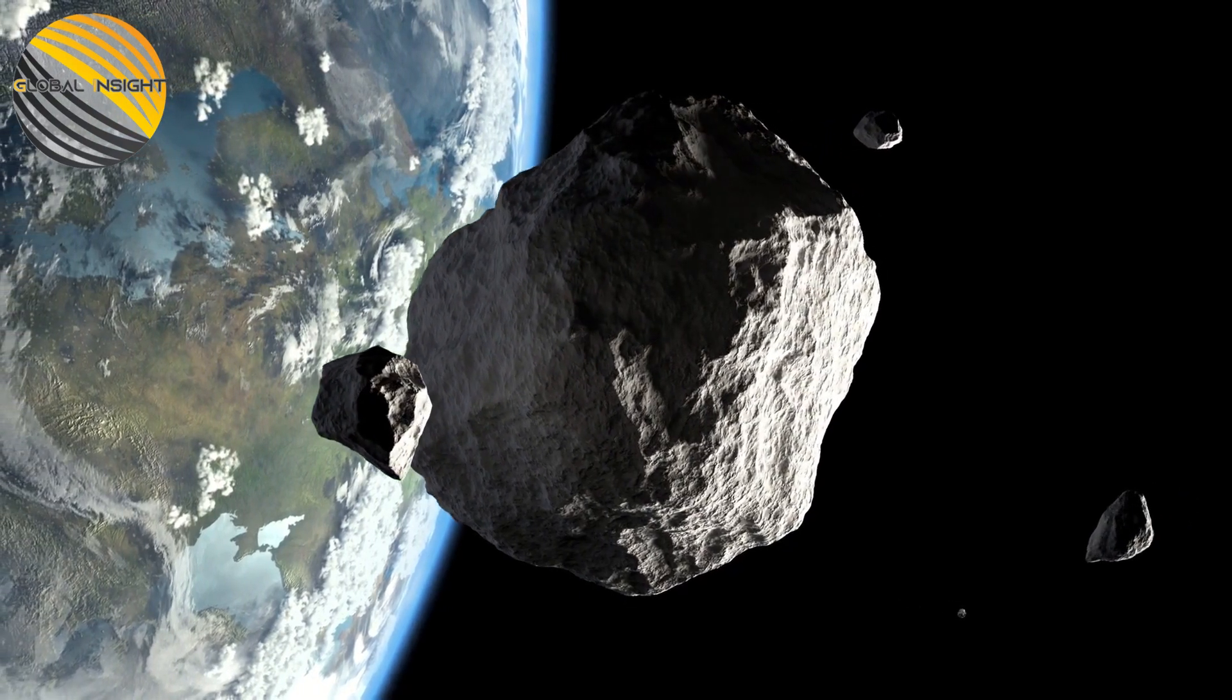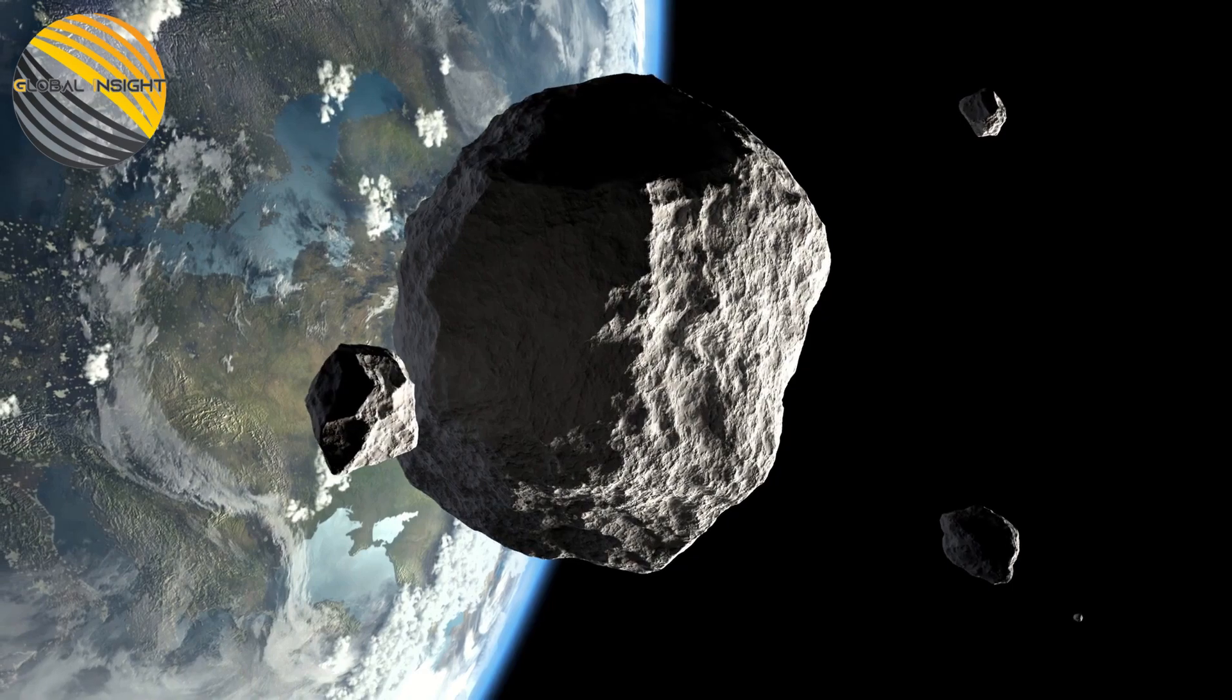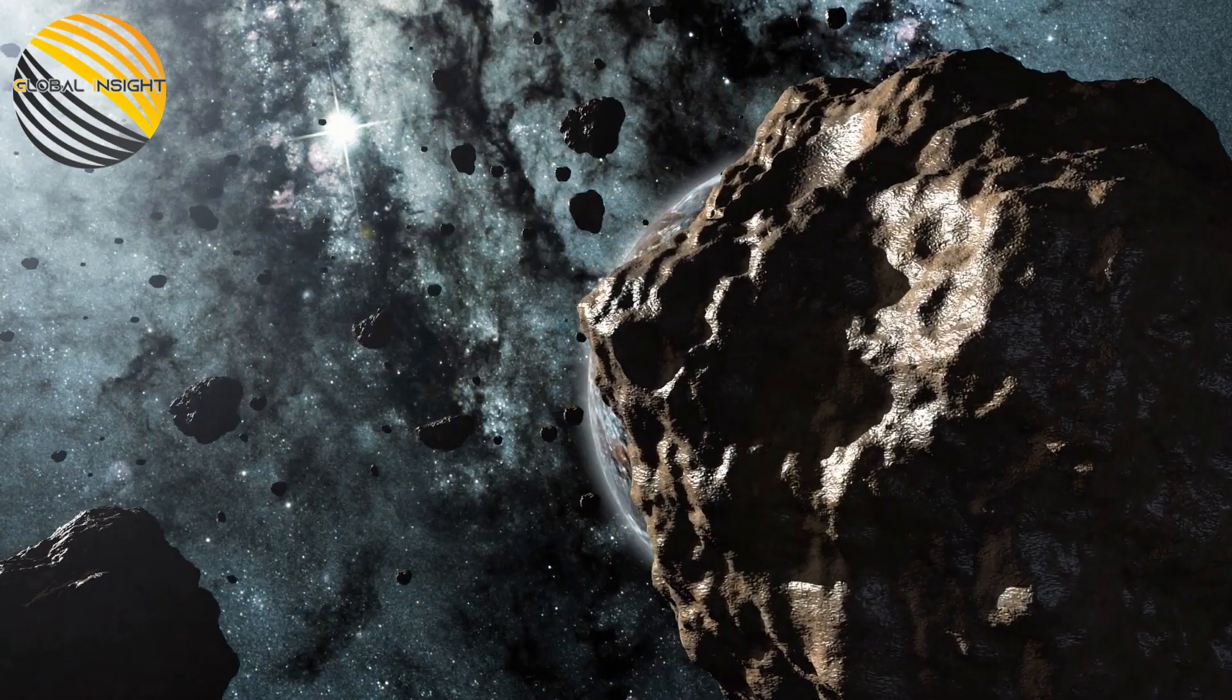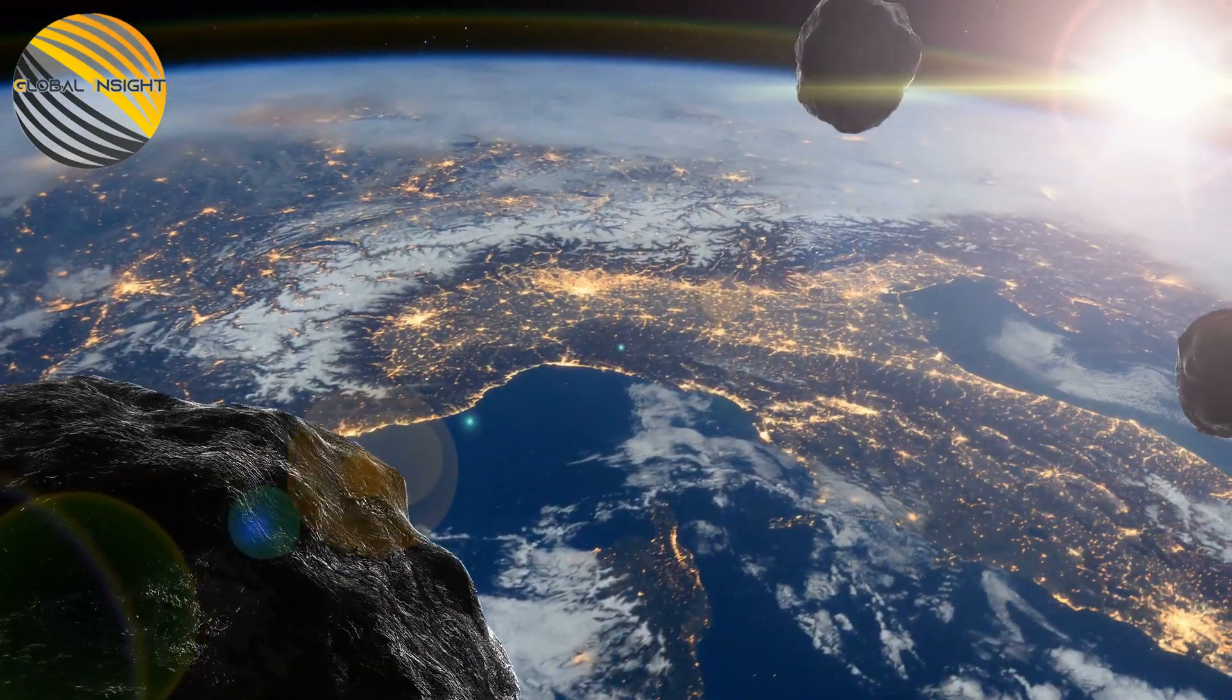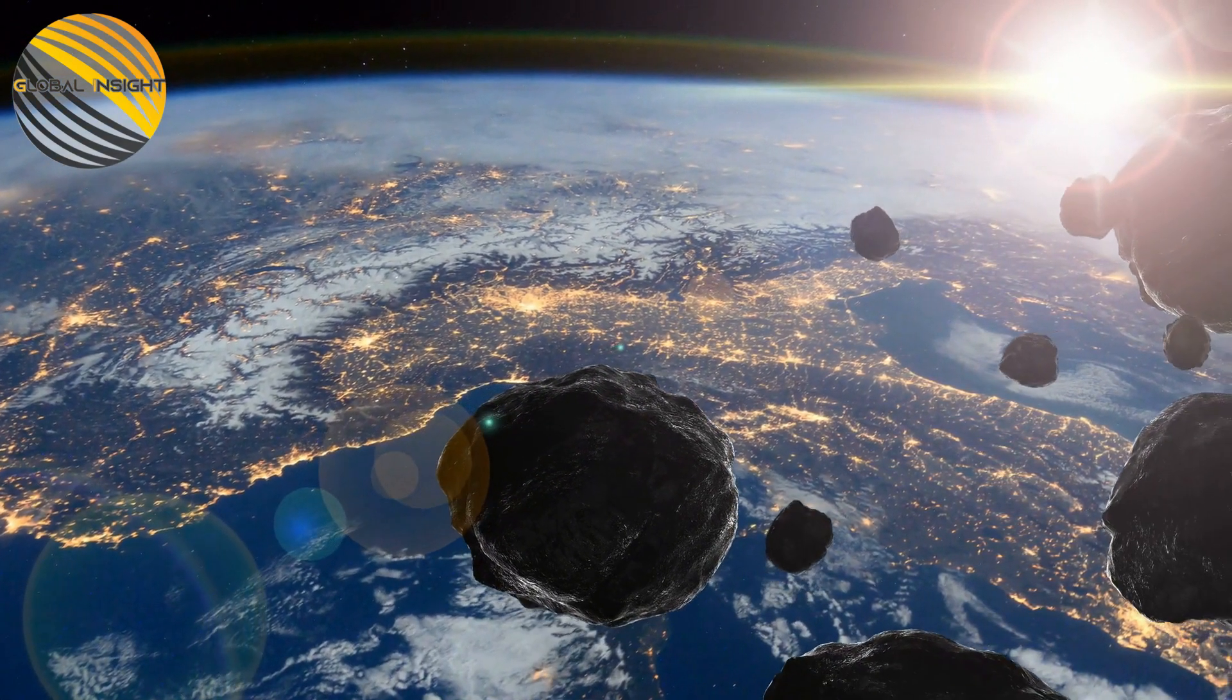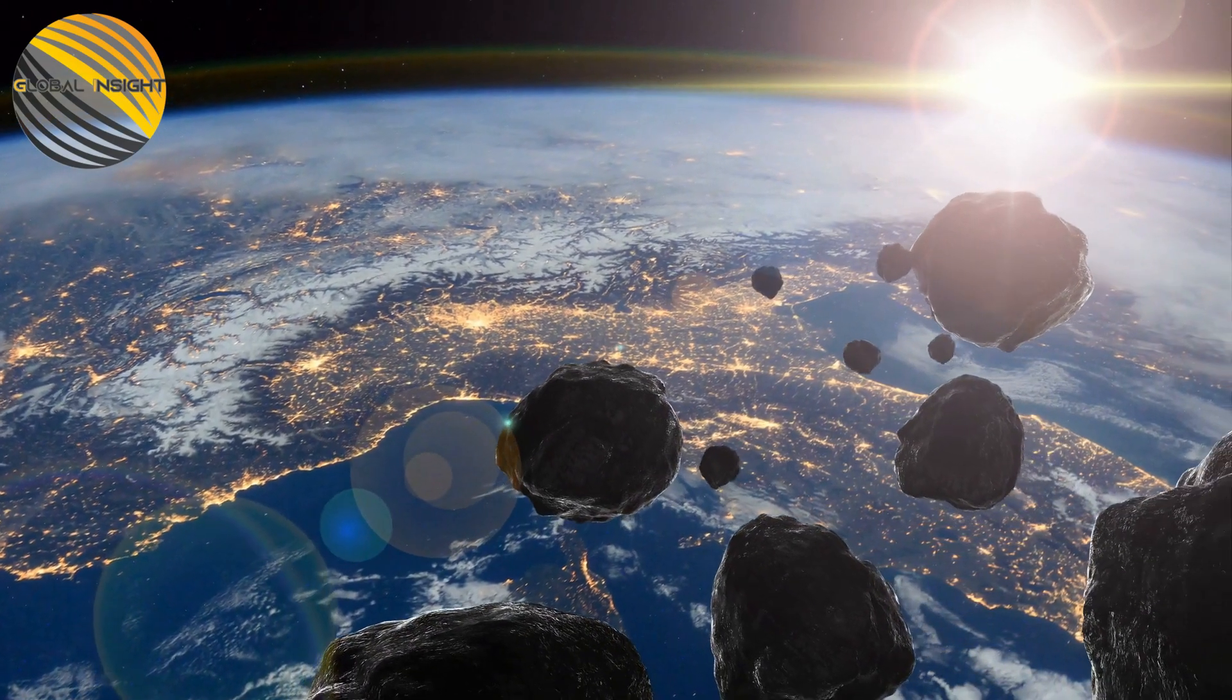Asteroid deflection strategies are already being developed by international space agencies if one were to ever approach our planet. In the first test of Earth's planetary defense system, the Double Asteroid Redirection Test spacecraft rammed the non-hazardous asteroid Demorphos off course on September 26. This altered the asteroid's orbit by 32 minutes.